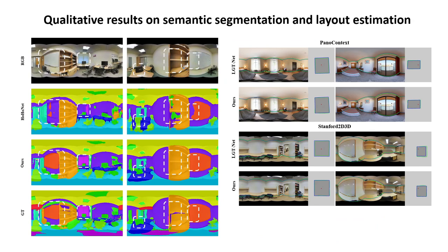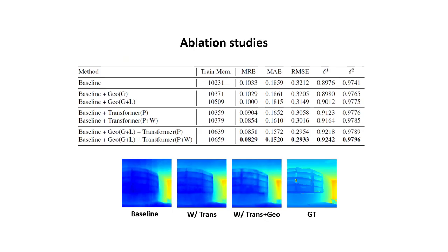Here are some qualitative results on semantic segmentation and layout estimation. Our method generates continuous segmentation masks on objects compared to the previous method. On room layout estimation, the modified PanelNet achieves competitive results against state-of-the-art method, which is specially designed for layout estimation.